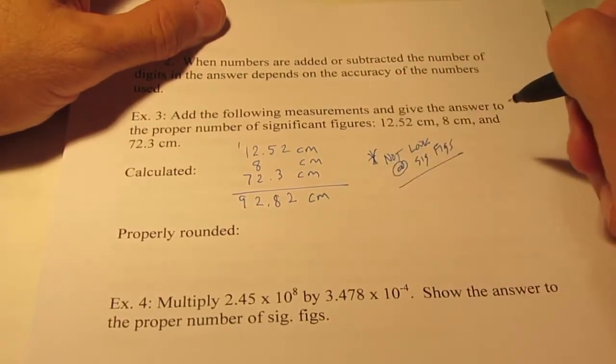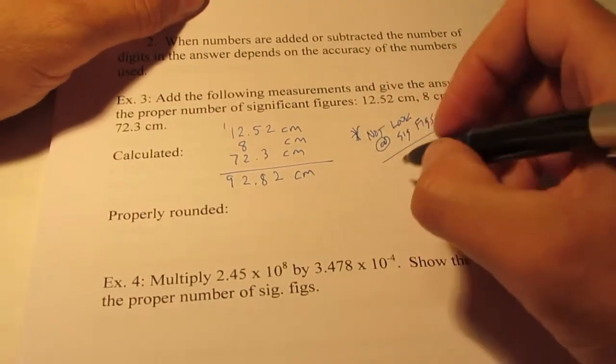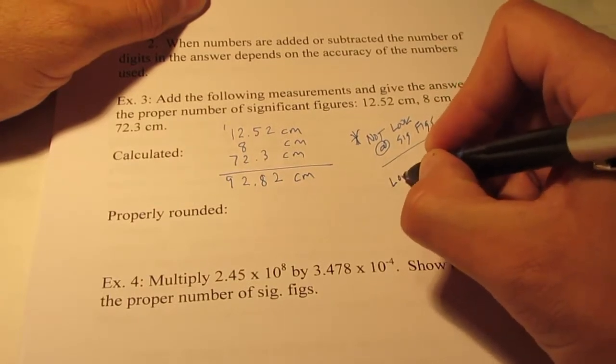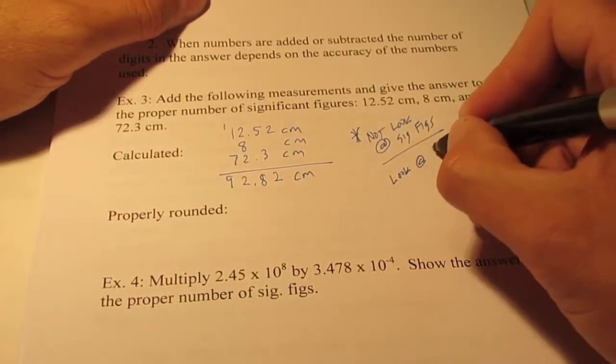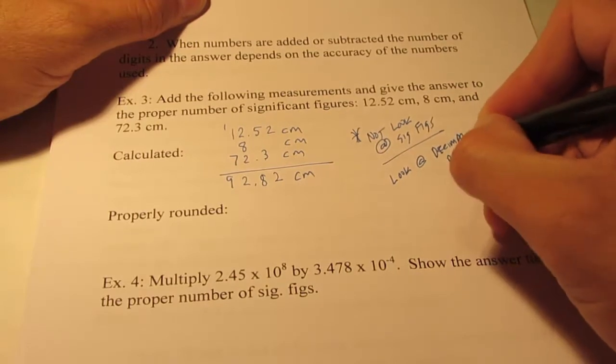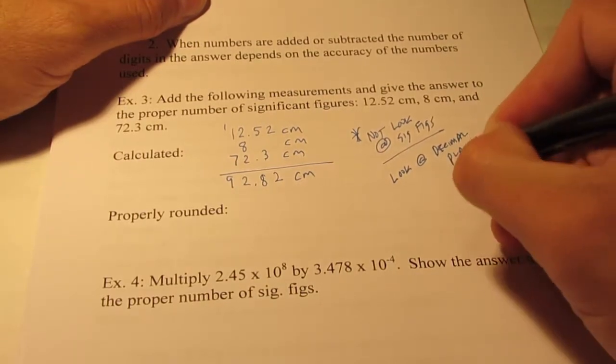So I claim that this has too many digits in it. This time I do not look at sig figs. Okay, do not look. When you add or subtract, do not look. I look at decimal points, or decimal places, when you add or subtract.